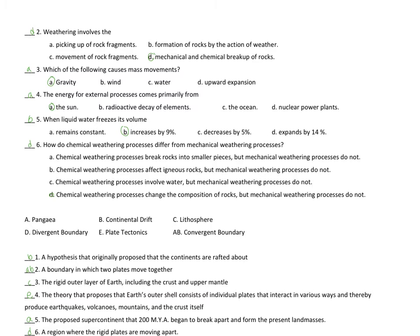The energy from external processes comes primarily from the sun. External processes from the sun. The radioactive decay of elements would be where you'd get geothermal energy, or energy inside the earth.